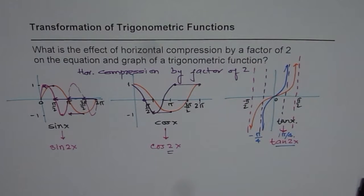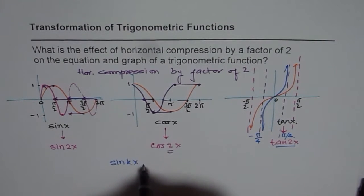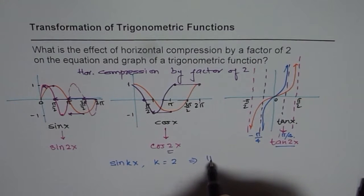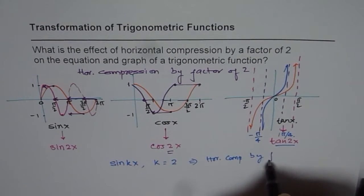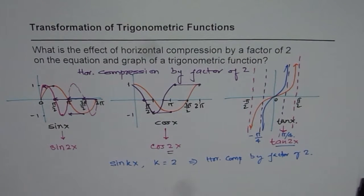So that is the effect of horizontal compression. So what you basically see is that the general function sine x will be sine kx, where k is equals to 2. It means horizontally compressed by a factor of 2.